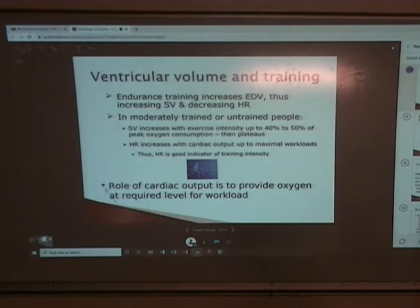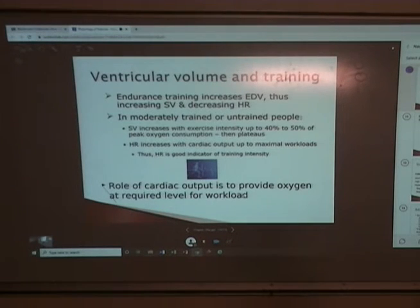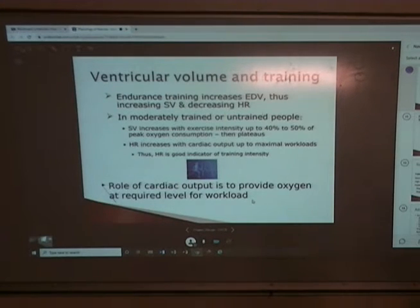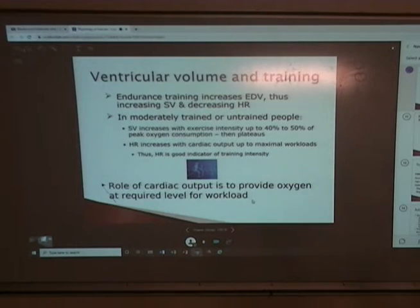The role of cardiac output Q is to make sure we're getting enough oxygen to the working muscles for the workload we're asking them to do. At rest, we also see an increase in stroke volume because of other adaptations to endurance training. We see quite a large increase in plasma volume in aerobic athletes, so the volume of blood coming back to the heart is larger because of this additional plasma volume.